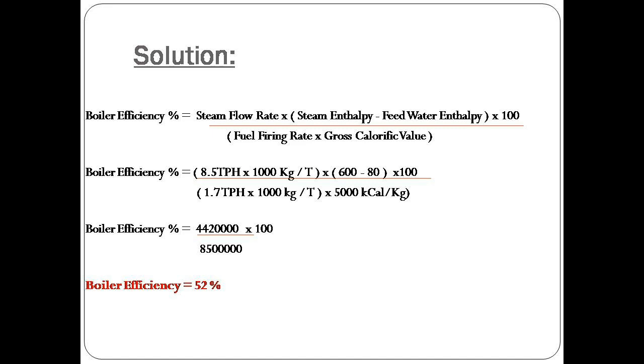Now steam flow rate is 8.5 ton per hour, but we have to convert that ton per hour into kg per hour because our enthalpy value is in kilocalories per kg.